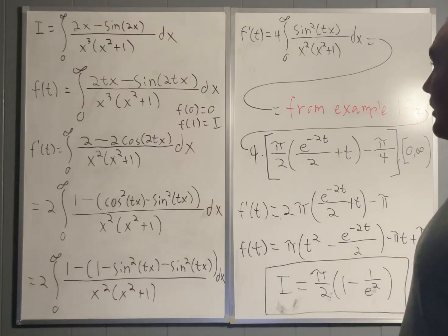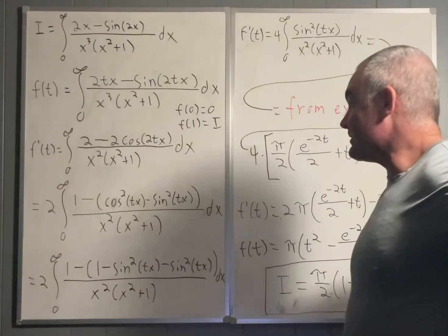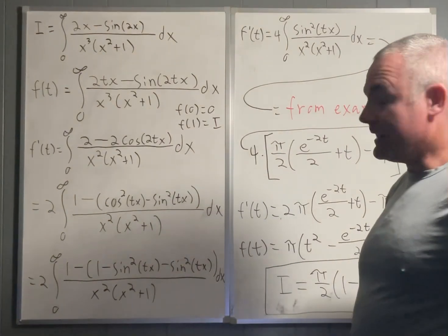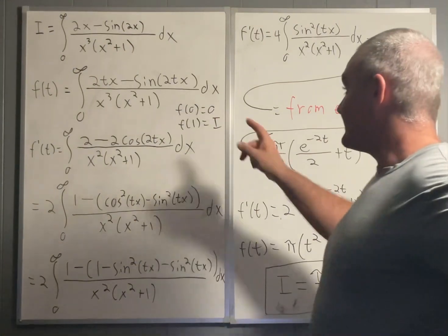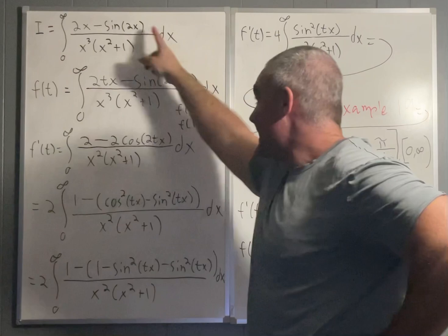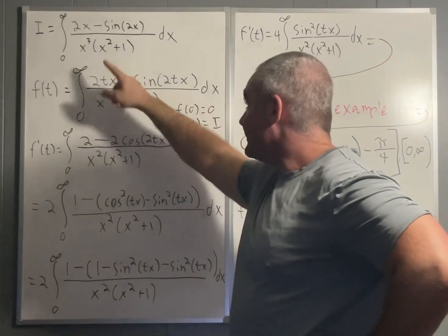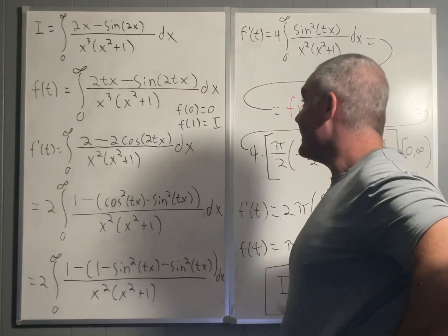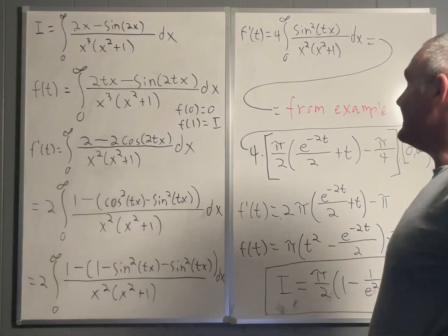Our first step, as always, is to create a function in terms of a new variable closely resembling our original integral. In this case, the new variable will be t and our f of t will be equal to basically the same thing except the 2x becomes a 2tx and the sine 2x becomes a sine 2tx.